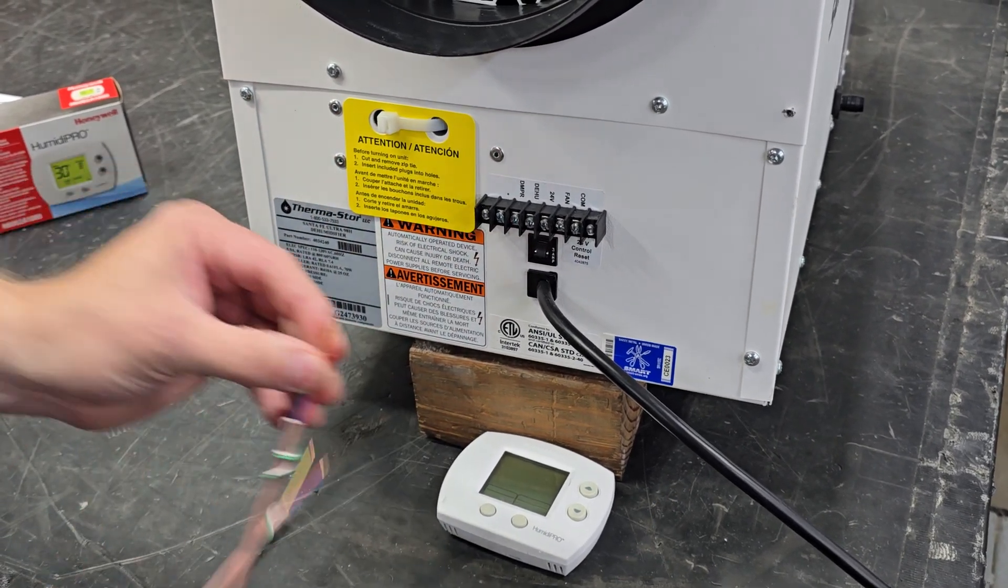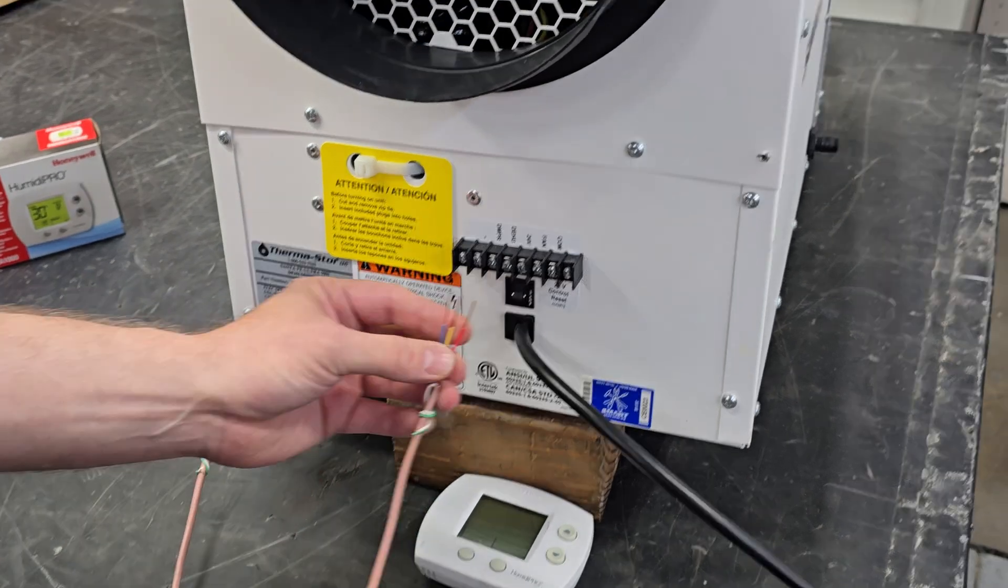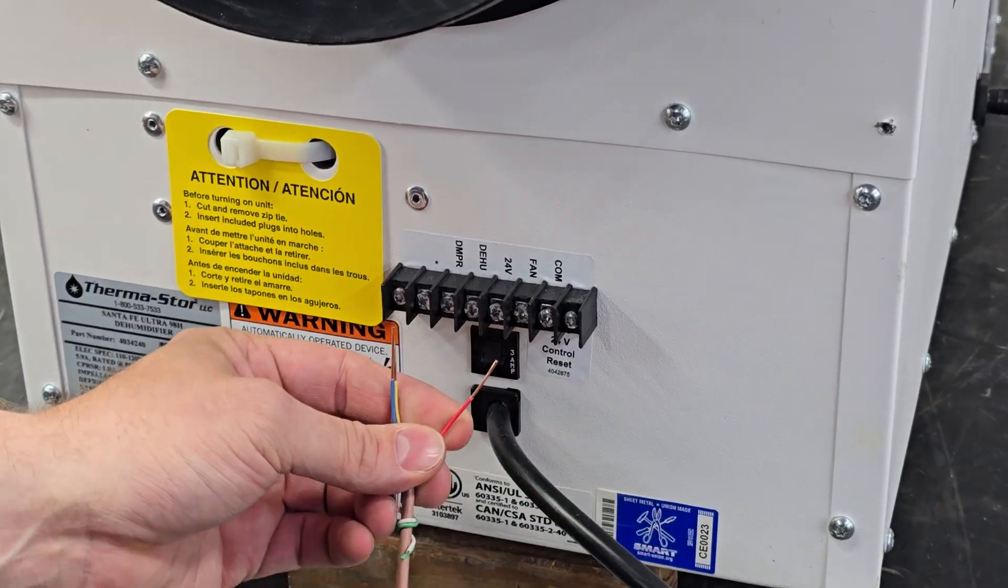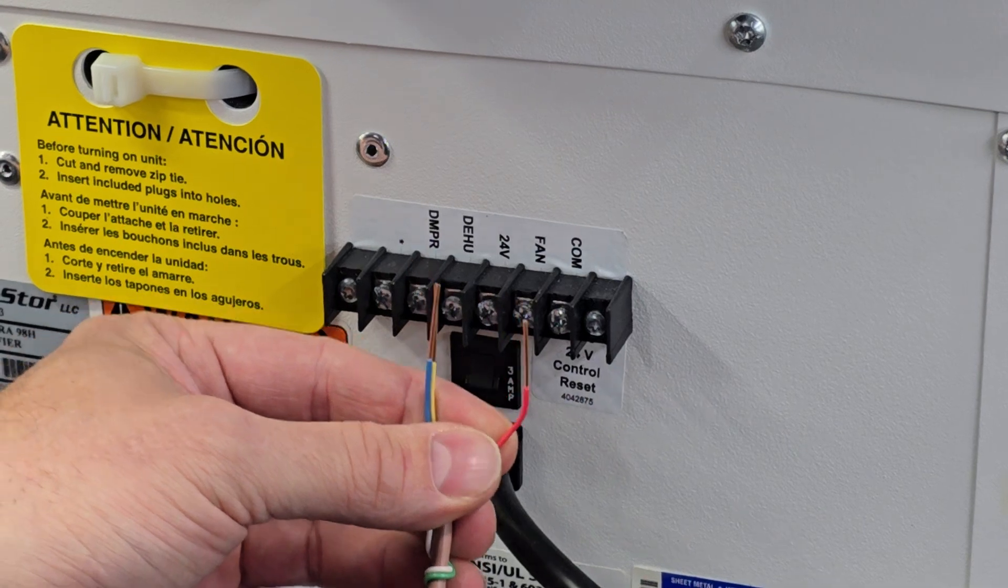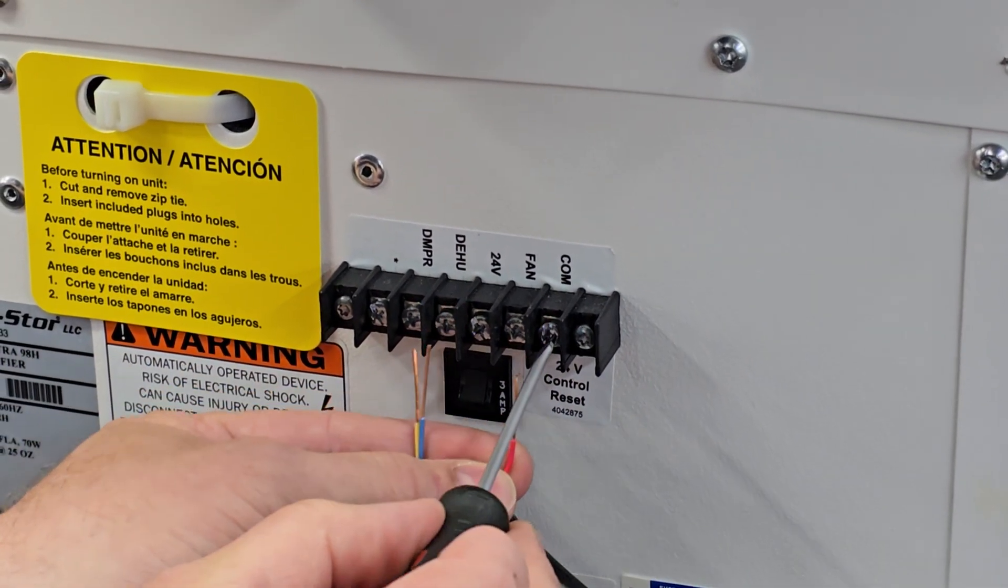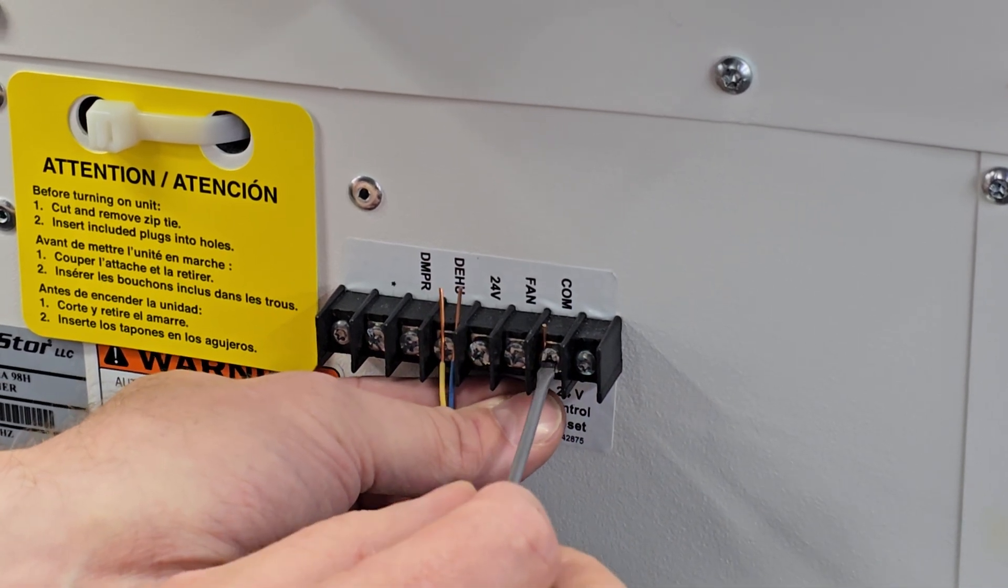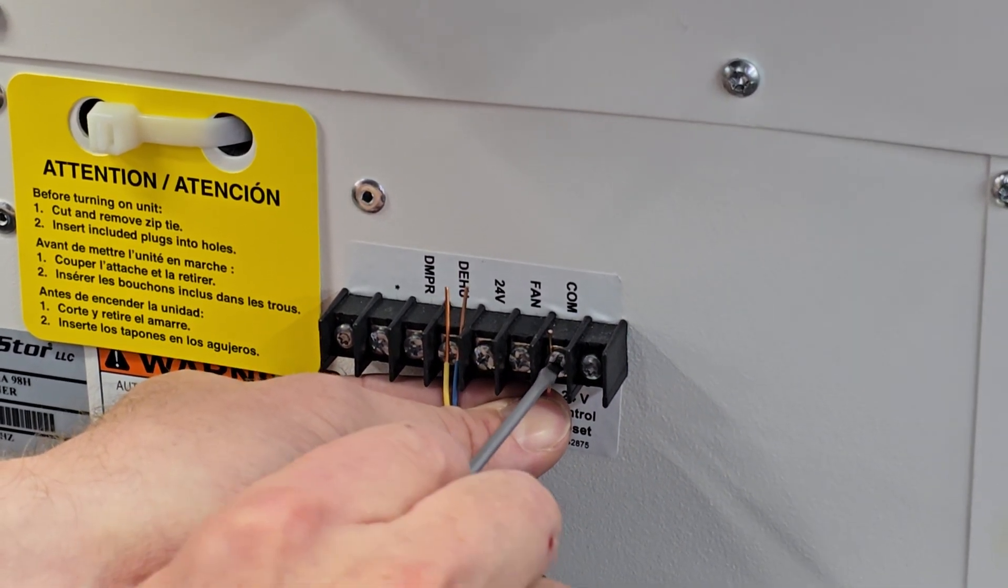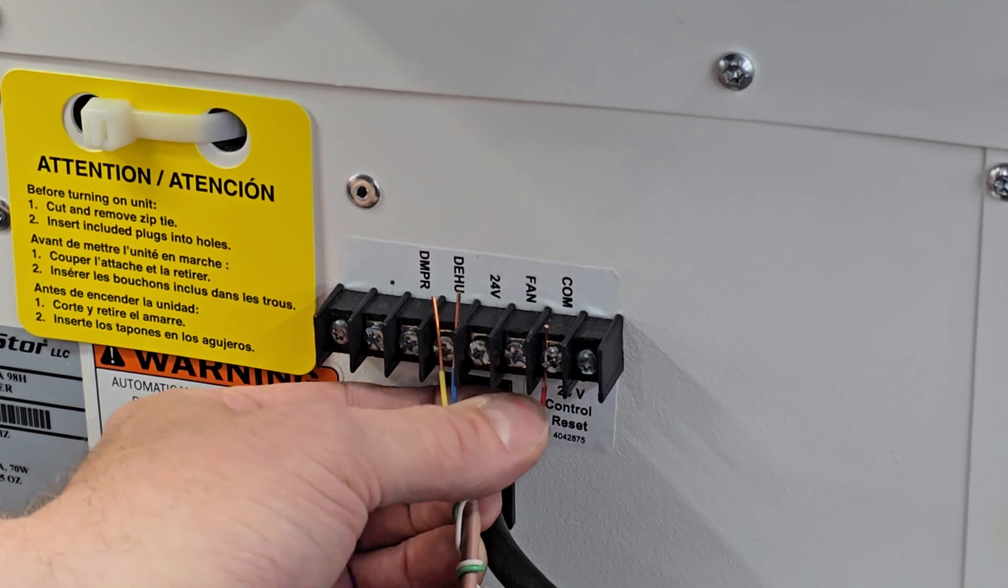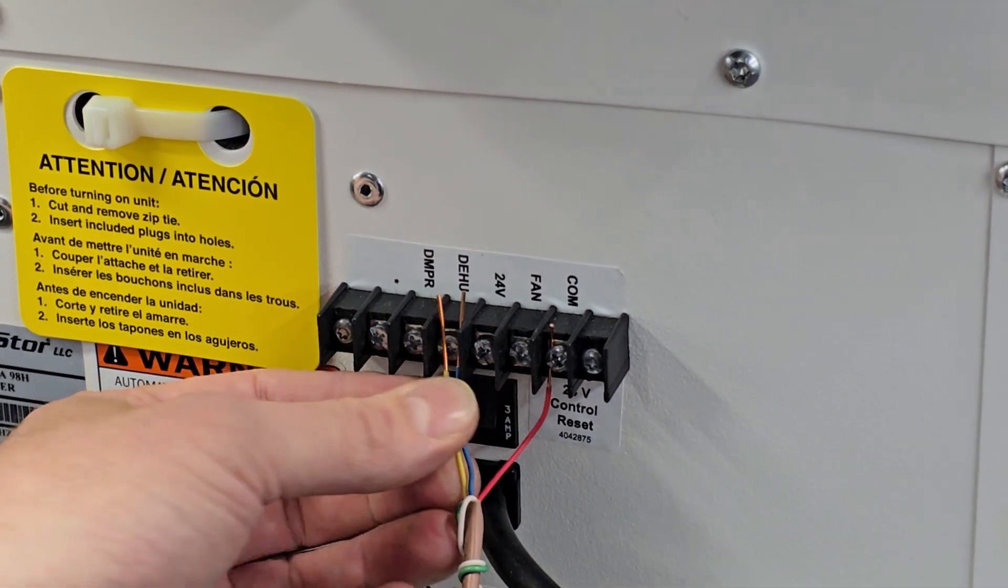The first step in wiring the unit would be to use the red wire to the common terminal. You can just unscrew this terminal here, stick it underneath, screw it down, and make sure it gets a good connection and pull.